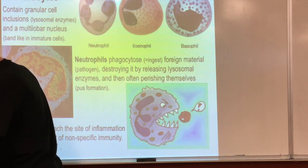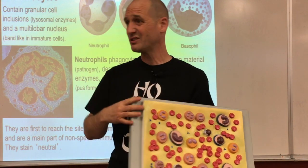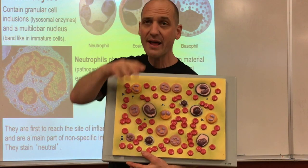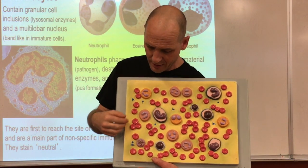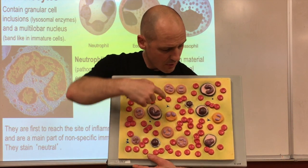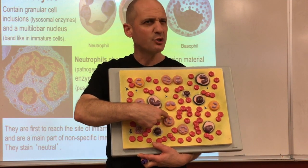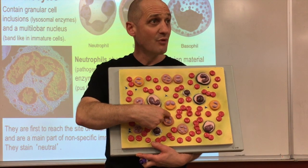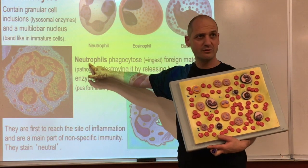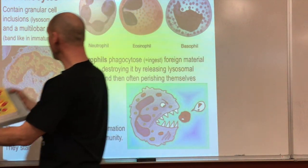Looking at the blood cell plaques, you can see cells with different colored dots. The neutrophils have granules that stain neutrally - they look like the background. We'll look at these more closely in lab to identify the different types.